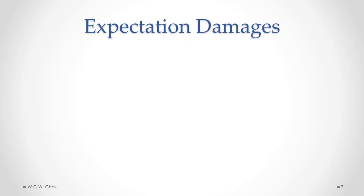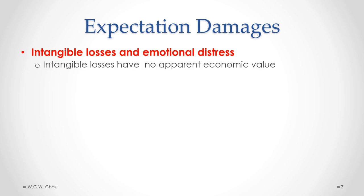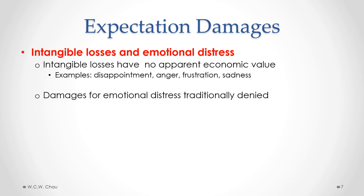Expectation damages puts a plaintiff or innocent party in the same financial position as if the contract had been properly performed, using the equation: expected damages equals expected benefits minus expected costs. This seems to emphasize compensation for monetary or dollar losses. But how do we deal with intangible losses, especially emotional distress arising from a breach of contract? The legal problem is that intangible losses have no apparent economic value — things such as disappointment, anger, frustration, and sadness are very difficult to assign an economic value to.